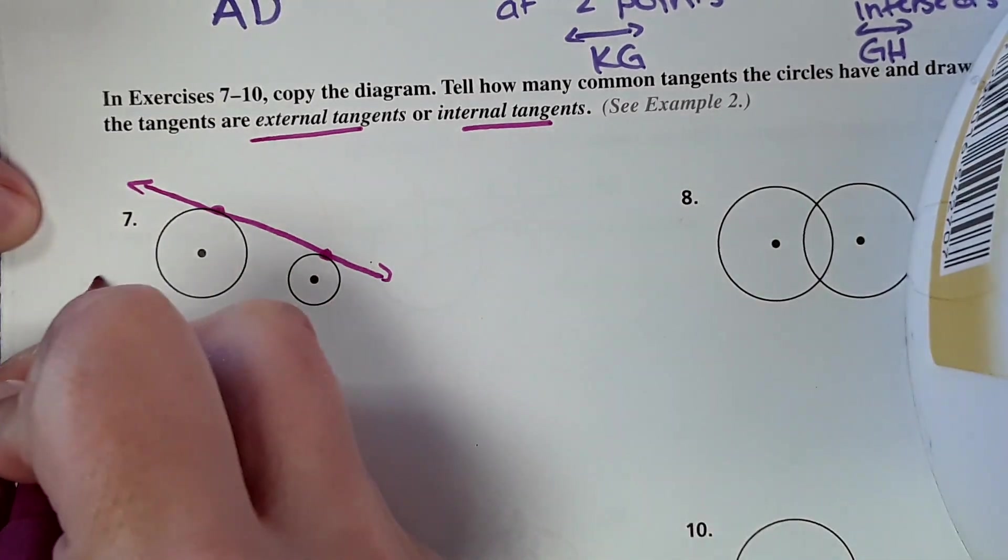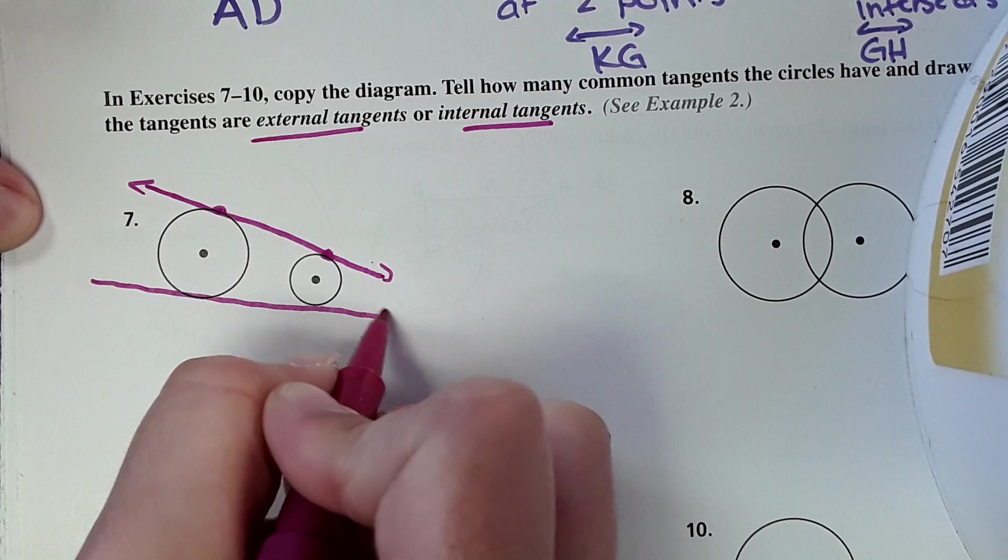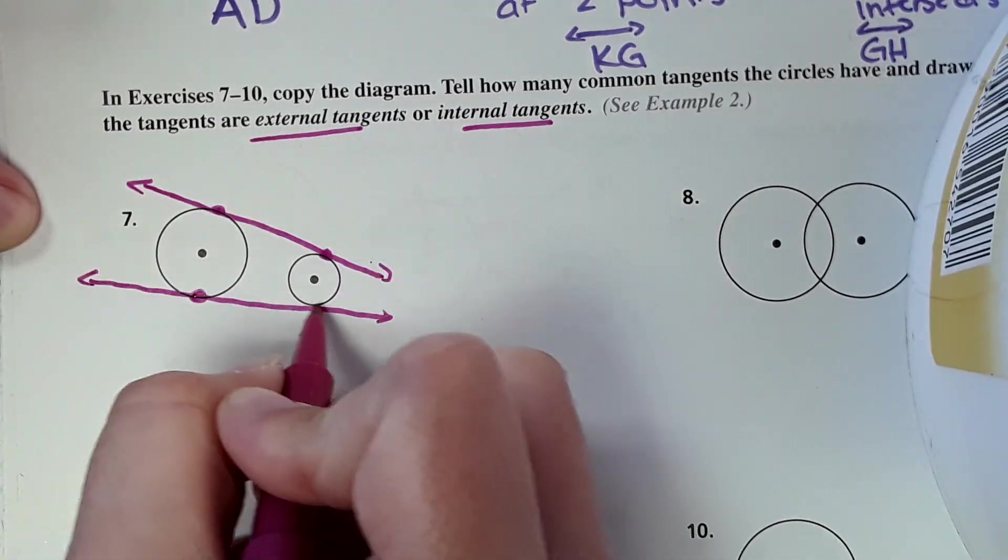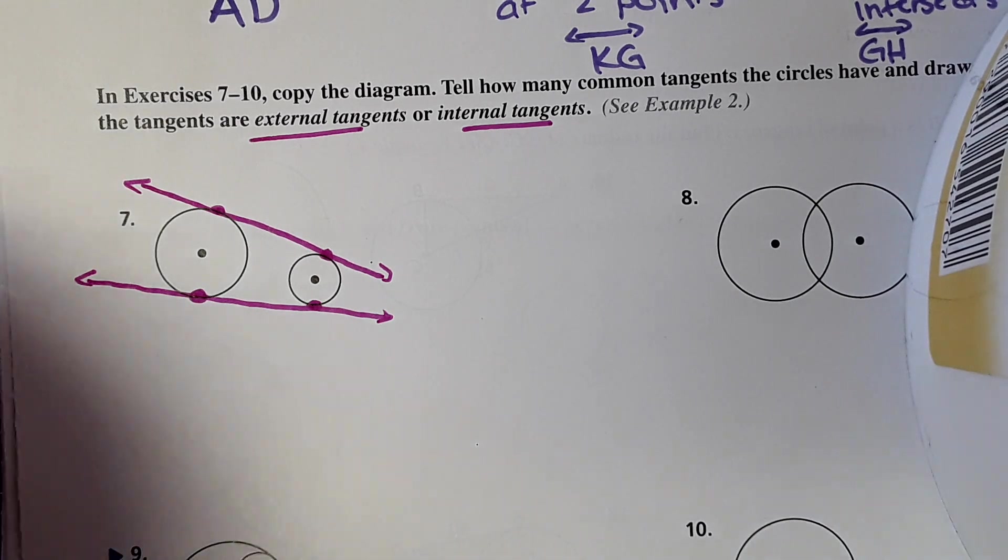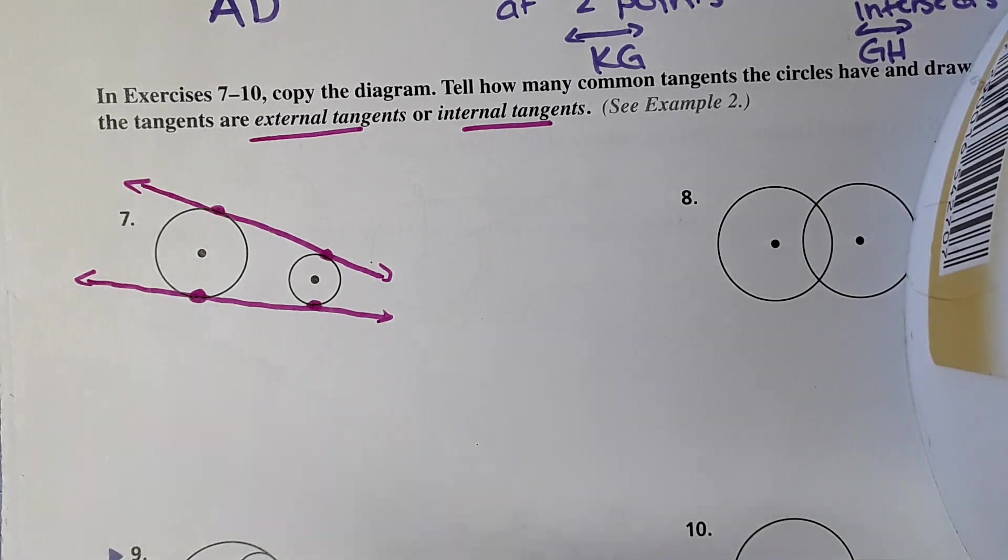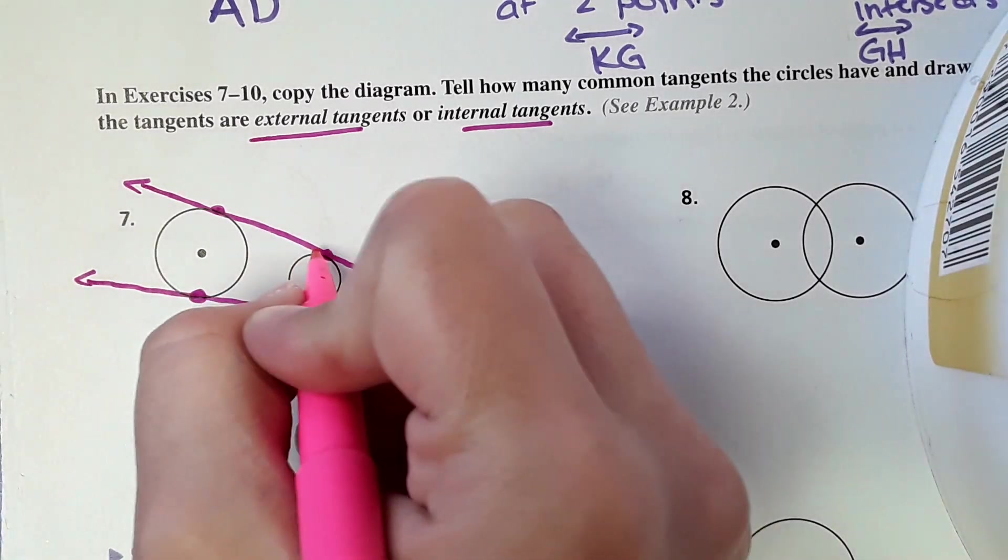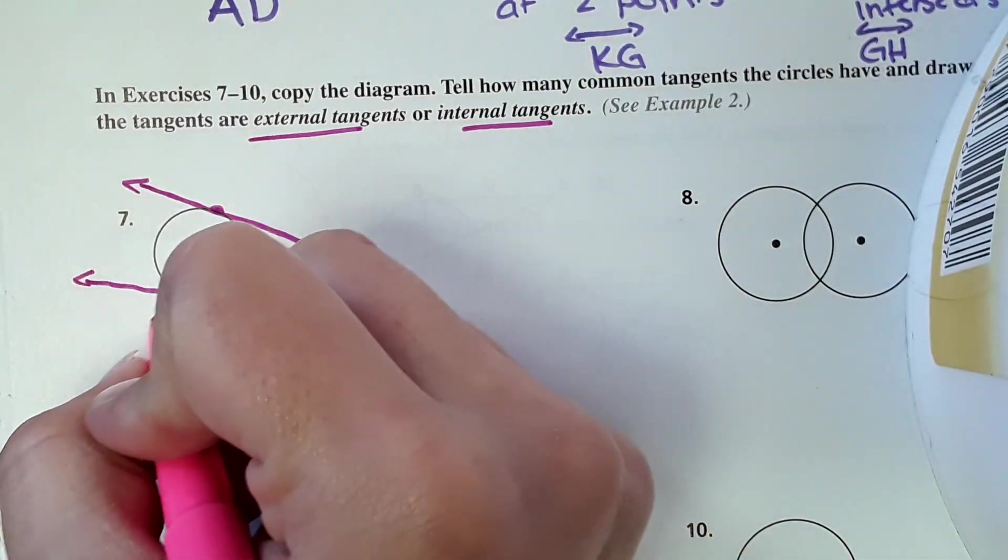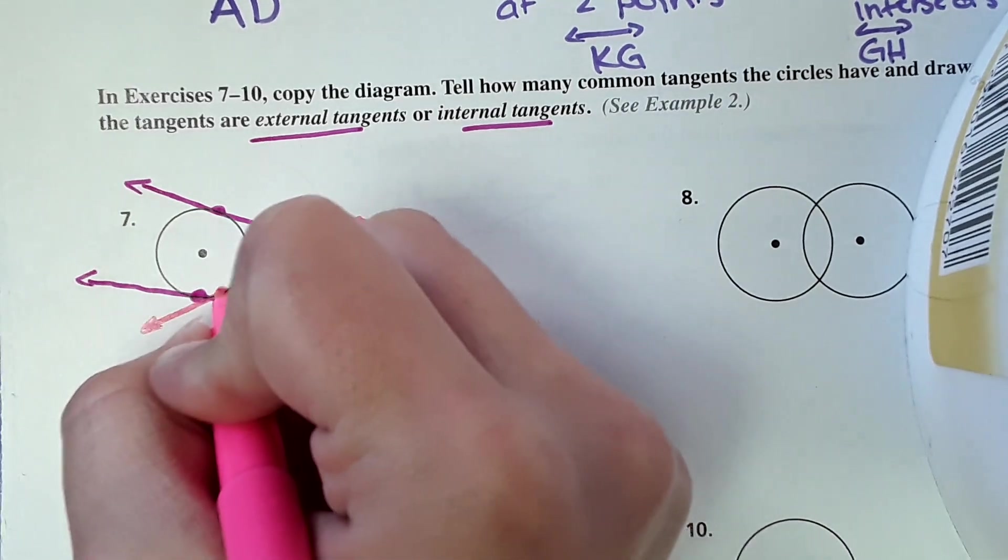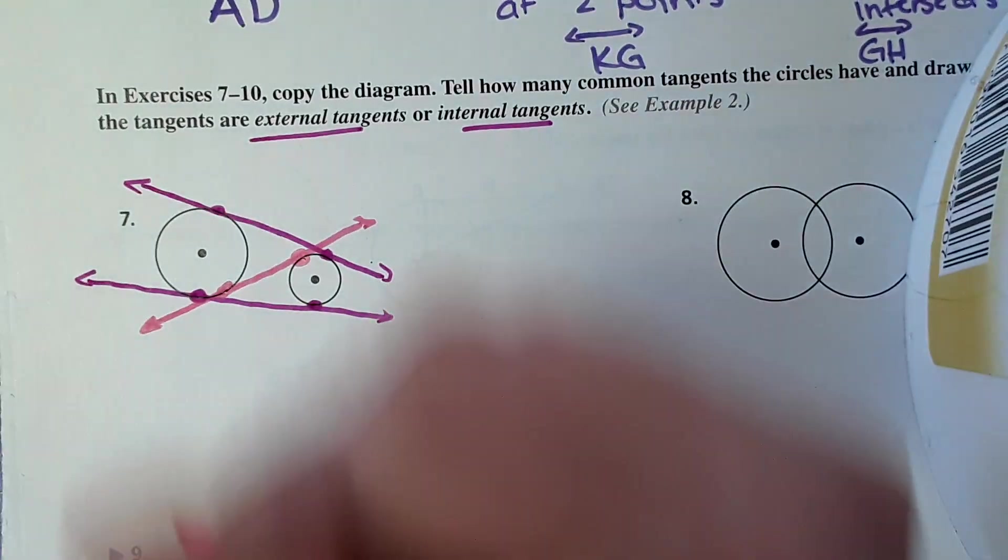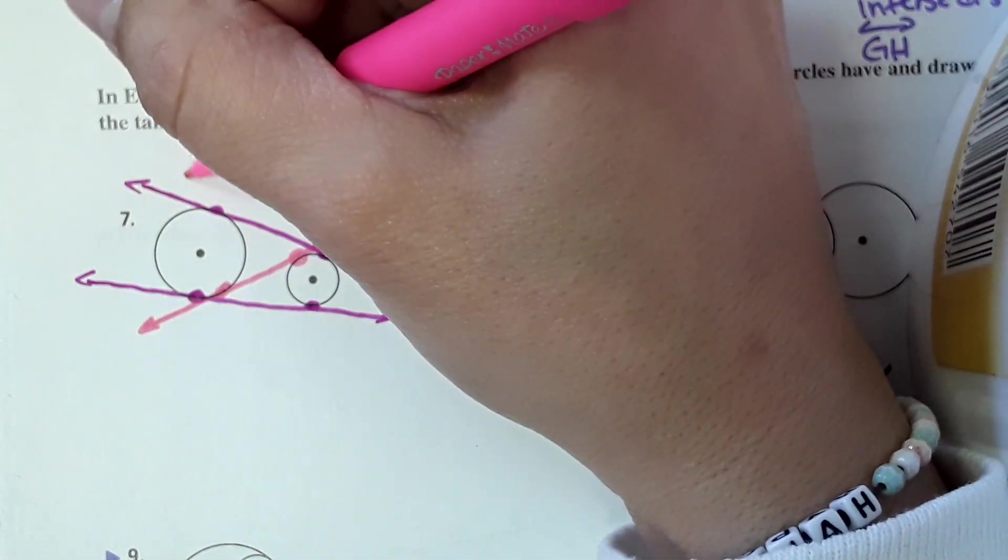And then if I was to draw one here, it would hit them each once. This would be a tangent line they have in common. Then I'm going in with another color. The other way we could draw a tangent line that would hit them both is like this. And it would intersect here and here. And then one right here.